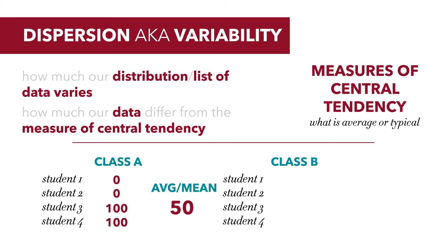Now suppose we have a second class, class B, and in that class student 1 scored a 49, student 2 scored a 49, student 3 a 51, and student 4 a 51. We can see that the mean test score for class B is also 50. So the means in the two classes are identical, they're 50.